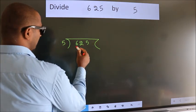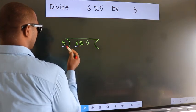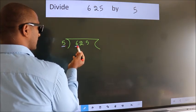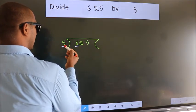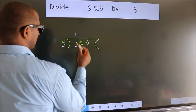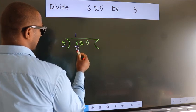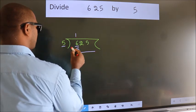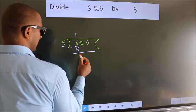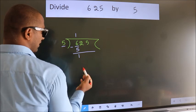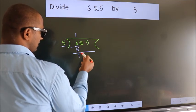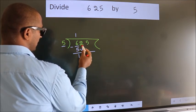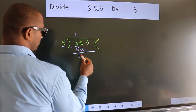Here we have 6, here 5. A number close to 6 in the 5 times table is 5 — 5 once is 5. Now we should subtract. We get 1. After this, bring down the beside number. So 2 comes down.